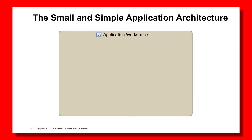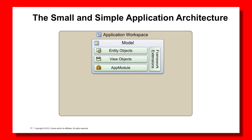The application workspace is made up of a Model project which includes entity objects, view objects, application modules, and potentially framework extensions. The number of EOs, VOs, and application modules is based on your requirements. Framework extensions are an Oracle recommendation where you create extension classes from the Oracle JBO server classes, allowing your EOs, VOs, and AMs to inherit from those classes. This allows you to later add code that applies across all entity objects or view objects by inserting it in the framework extension classes rather than individual implementation classes.